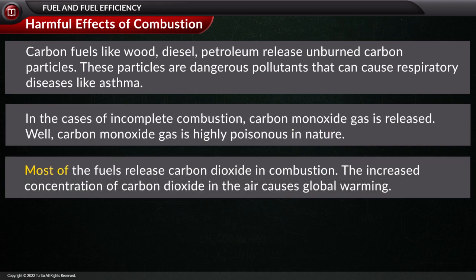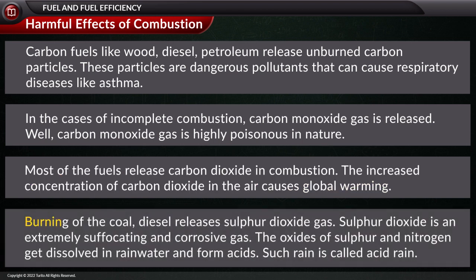Most fuels release carbon dioxide during combustion. The increased concentration of carbon dioxide in the air causes global warming. Burning of coal and diesel releases sulfur dioxide gas. Sulfur dioxide is an extremely suffocating and corrosive gas. The oxides of sulfur and nitrogen get dissolved in rainwater and form acids. Such rain is called acid rain.